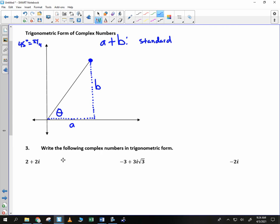Does anybody remember what we call the distance from zero to this coordinate? Do you remember what we called that on Thursday? Modulus, yeah. Yeah, we said the modulus was the absolute value of z. Do you remember how we calculated that? The square root of a squared plus b squared.